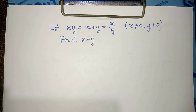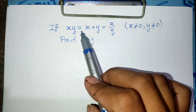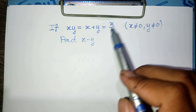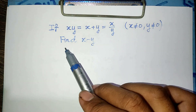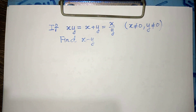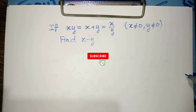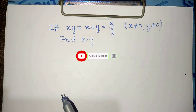Hello everyone, welcome to my YouTube channel. Today I have one exercise: if x multiplied by y equals h plus y, equals h divided by y, where h is non-zero and y is non-zero, find the values of the expression h minus y. If you know how to solve this, please do it, then come back to watch my video from beginning to end to verify your solution. Before we go to the solution, please don't forget to subscribe to my channel for more exciting videos.